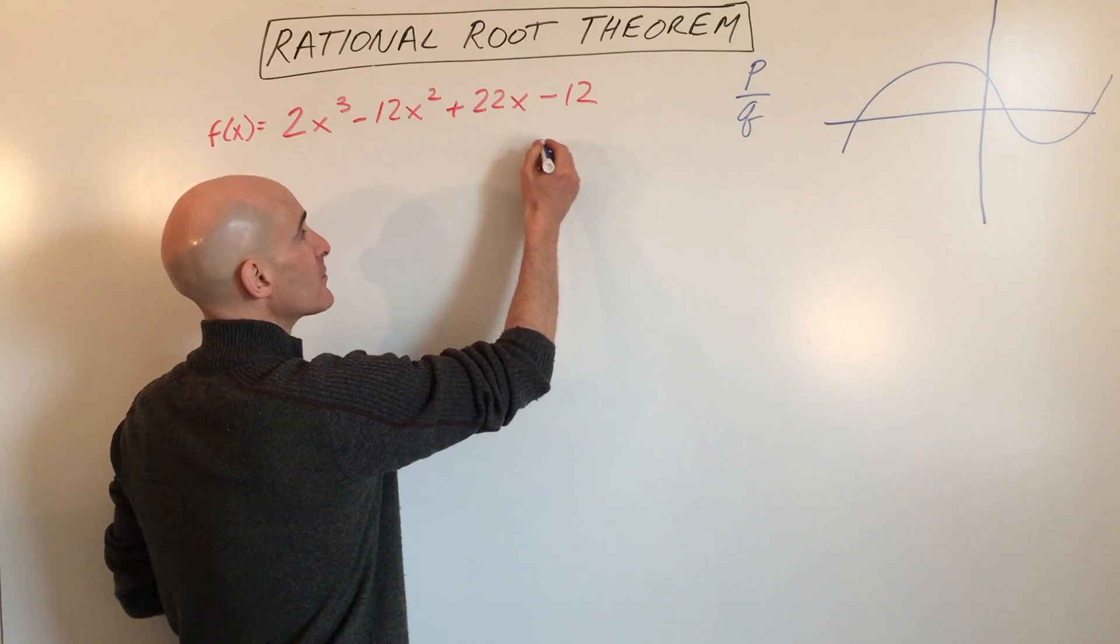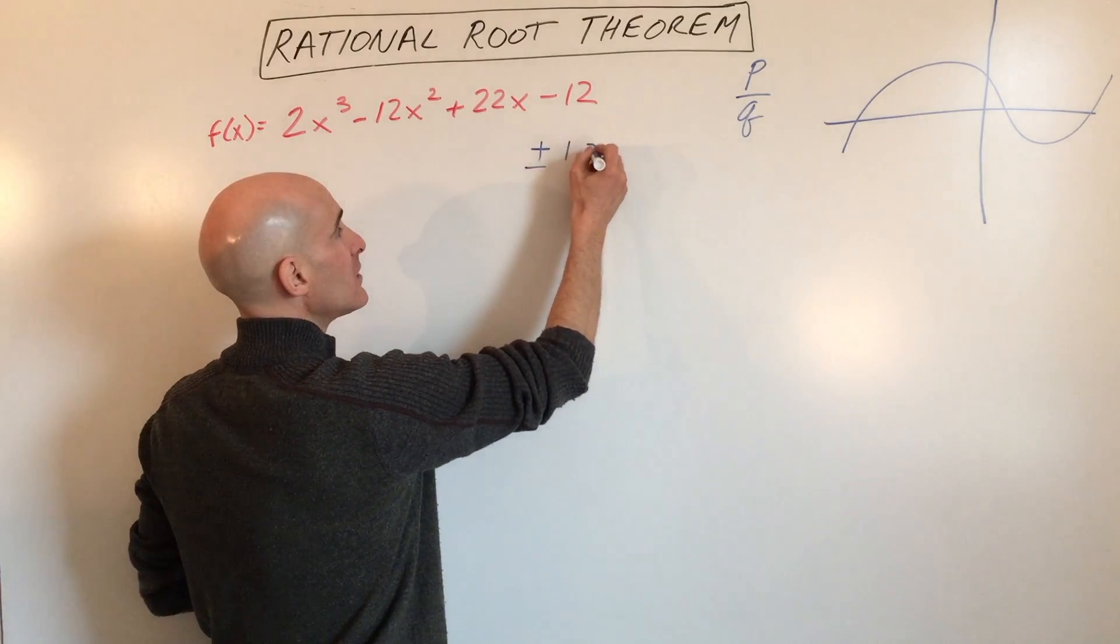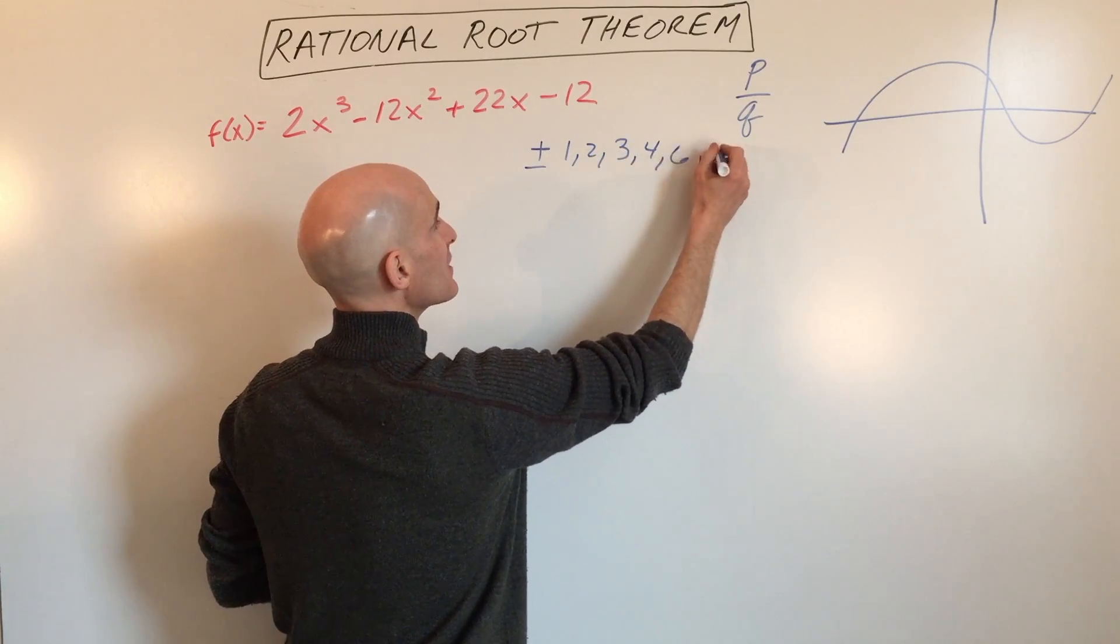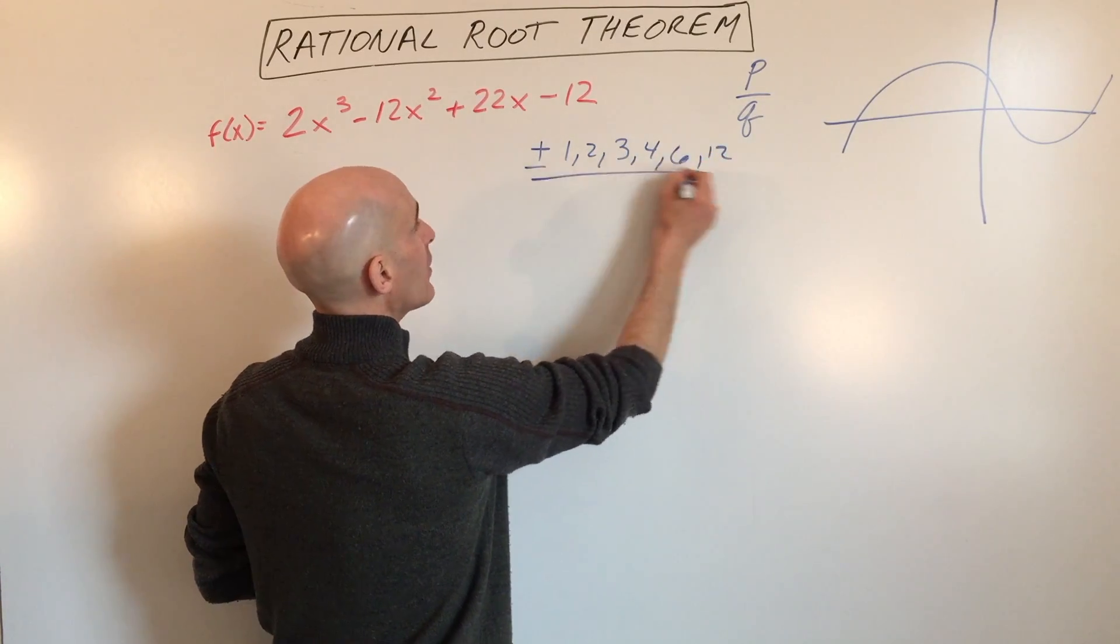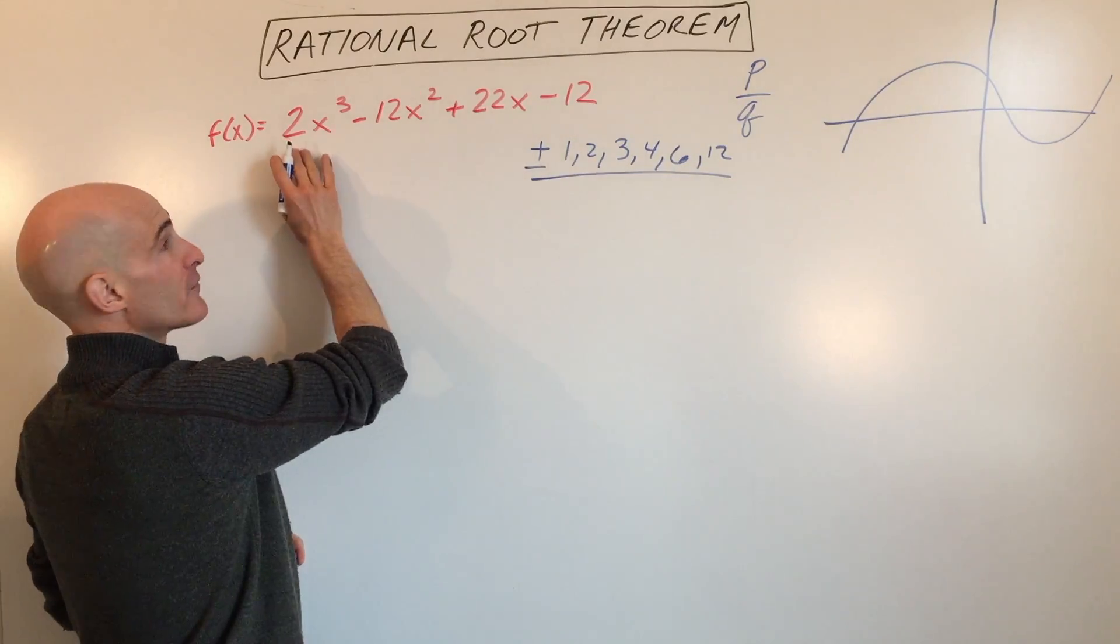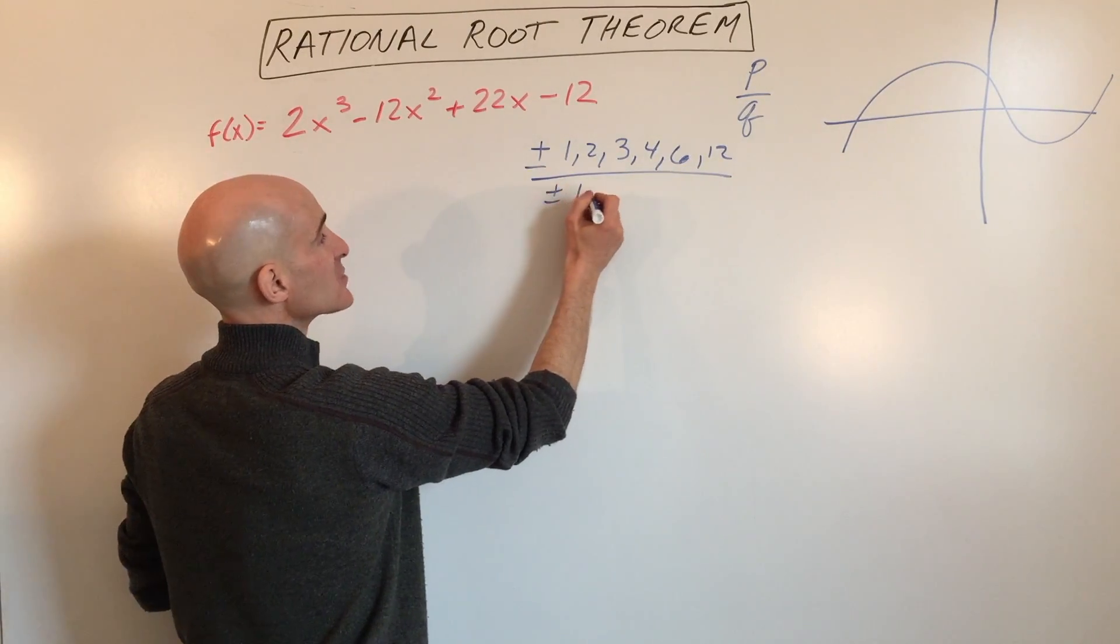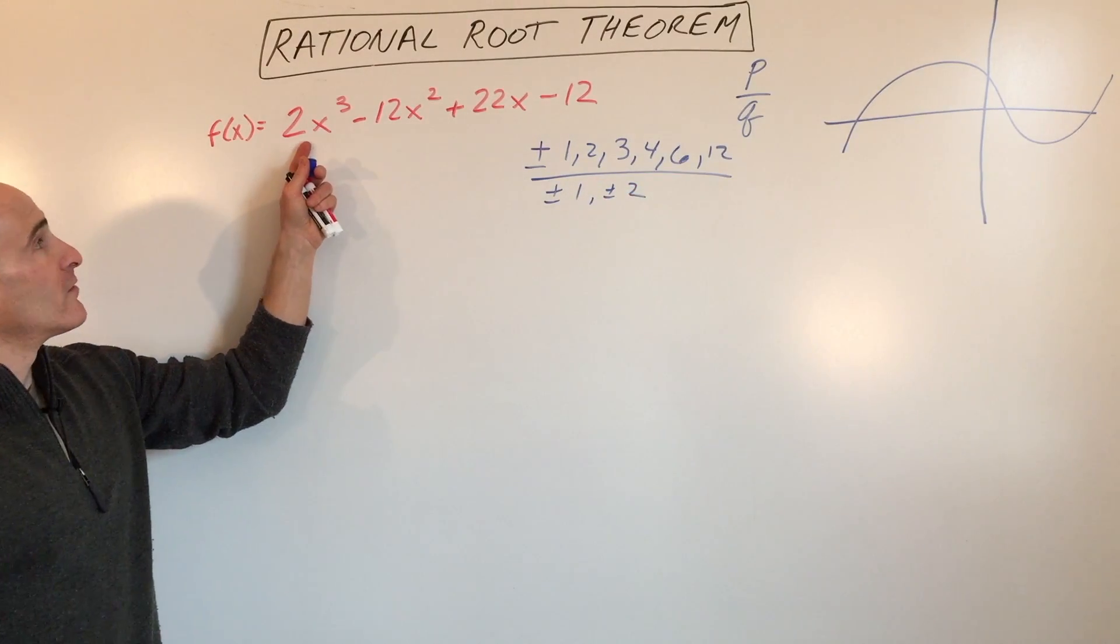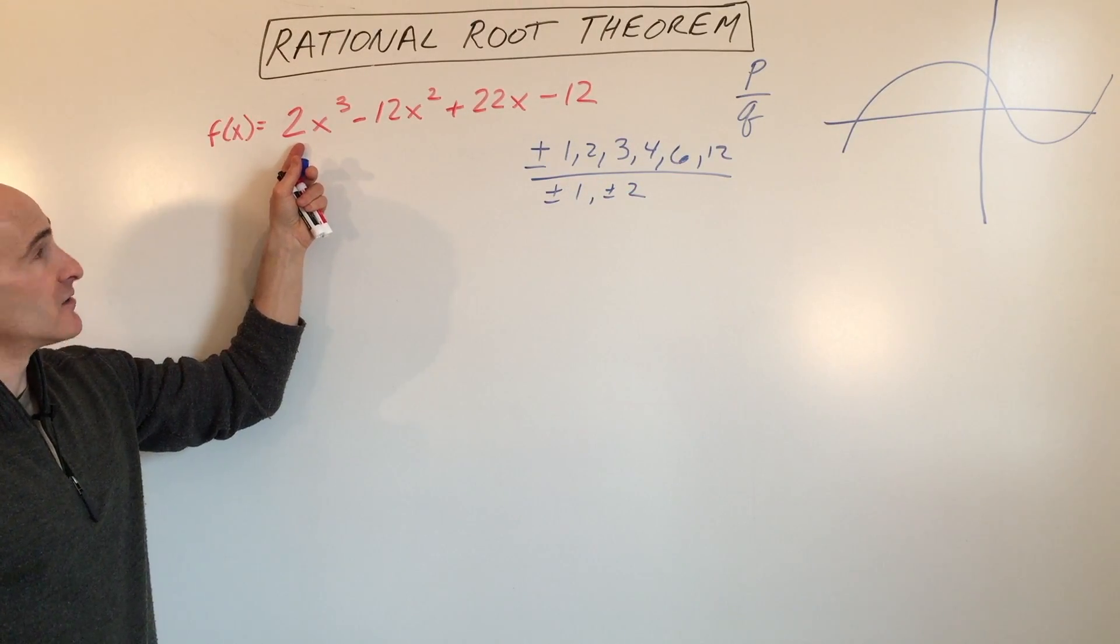All the factors of 12 are going to be plus or minus 1, 2, 3, 4, 6, and 12. And all the factors of the leading coefficient would just be plus or minus 1, or plus or minus 2.